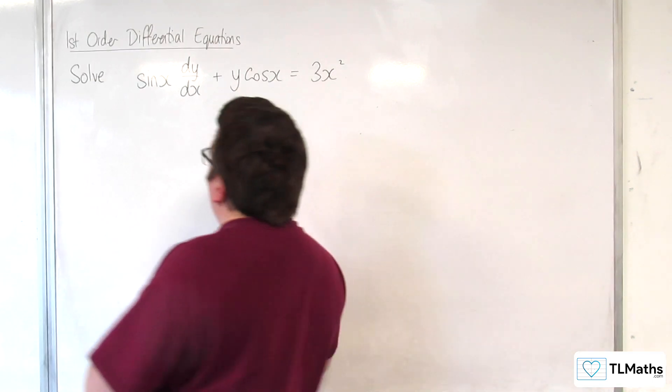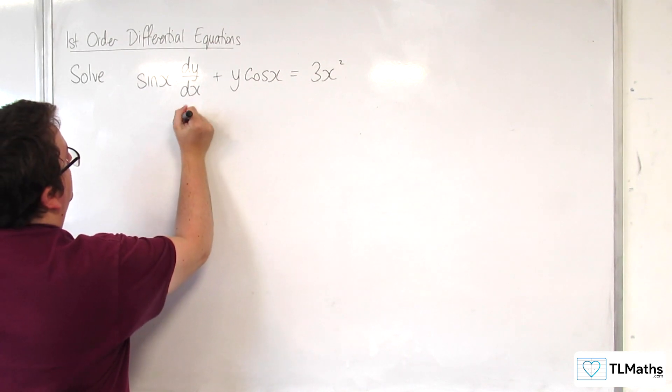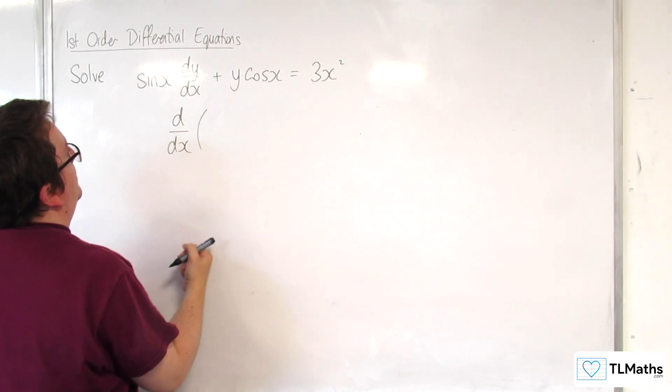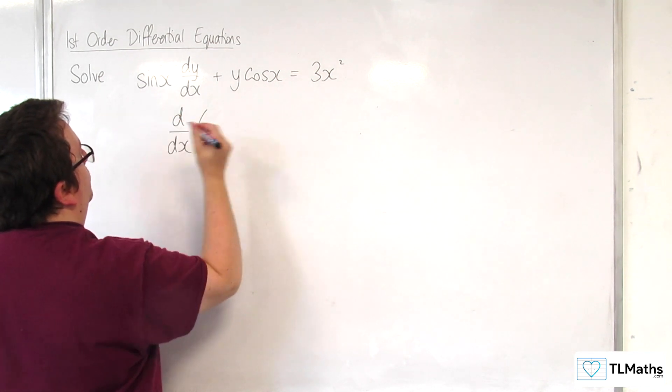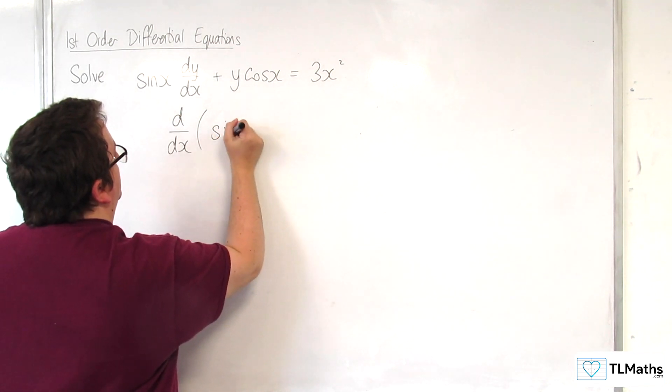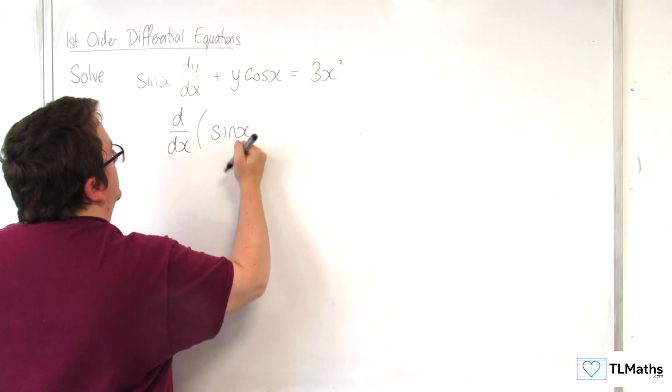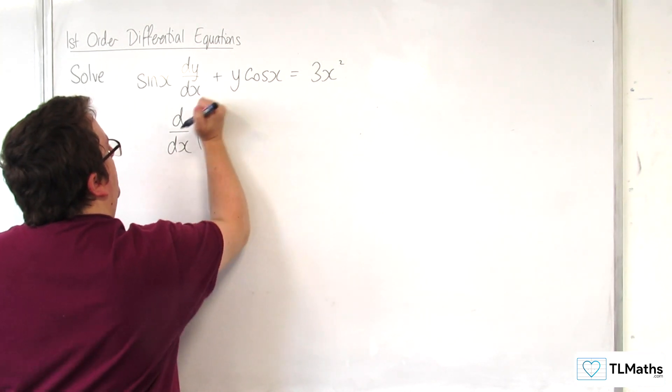So that left hand side is the same as d by dx of sine x times y. Maybe I should write them the other way around. So y sine x.